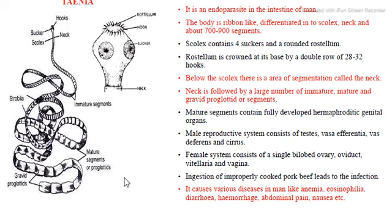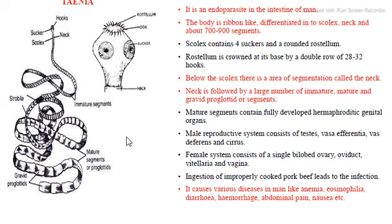The larvae develop in the muscles of the pig. When humans eat the muscles in an uncooked condition, infection occurs in the intestinal system. The head region, called the scolex, is rounded. In the center there is the mouth. On the side there is a muscular band known as the rostellum. On the rostellum there is a presence of hooks for attachment. The head region also has suckers that attach to the small intestine lining.